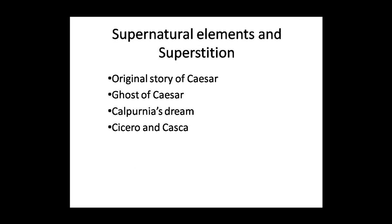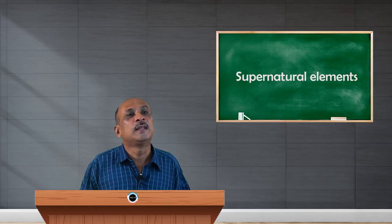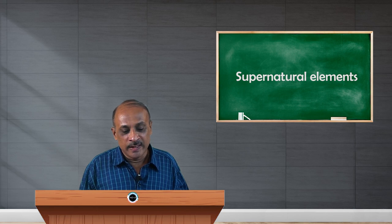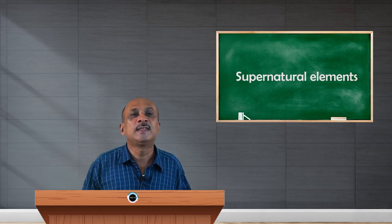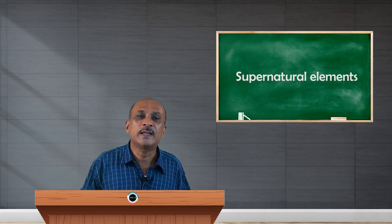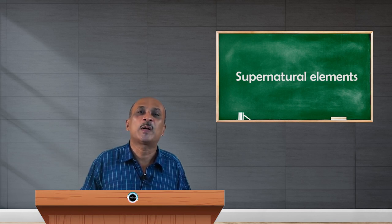Caesar who is ready to be with action dismisses these elements as superstitious and not supposed to be believed. But his wife who believes in these elements doubts that there is some danger because the beasts, lioness or warriors washing their hands in the blood in the capital are enough to suggest that they should be considered as serious elements going to affect the lives of important persons.